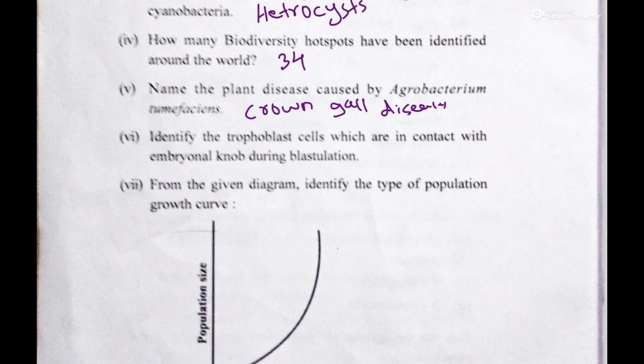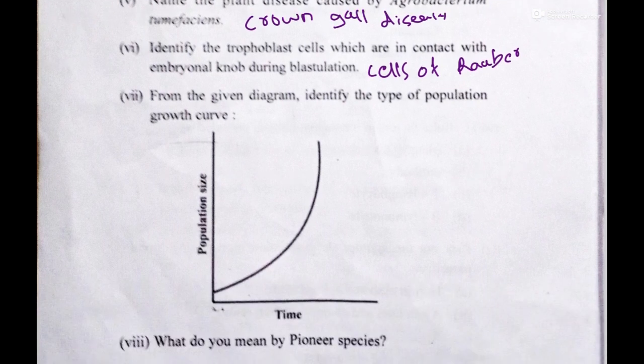The sixth question: identify the trophoblast cells that are in contact with the embryo during blastulation. Its answer is cells of Rauber. The seventh question: how does Rover show its growth? It shows exponential growth.